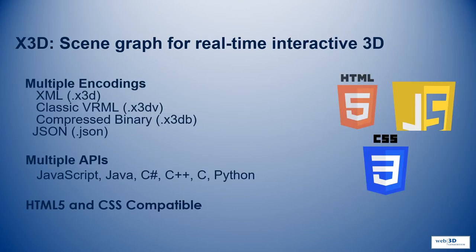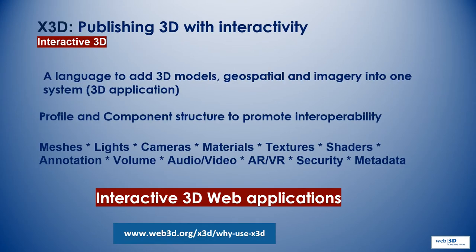X3D has multiple encodings, multiple APIs, and it's HTML and CSS compatible. It's a publishing specification for interactive 3D — a language to add 3D models, geospatial data, and imagery into one system. It has a profile and component structure to promote interoperability, and it has several 3D features to enable very high-end interactive 3D web applications.